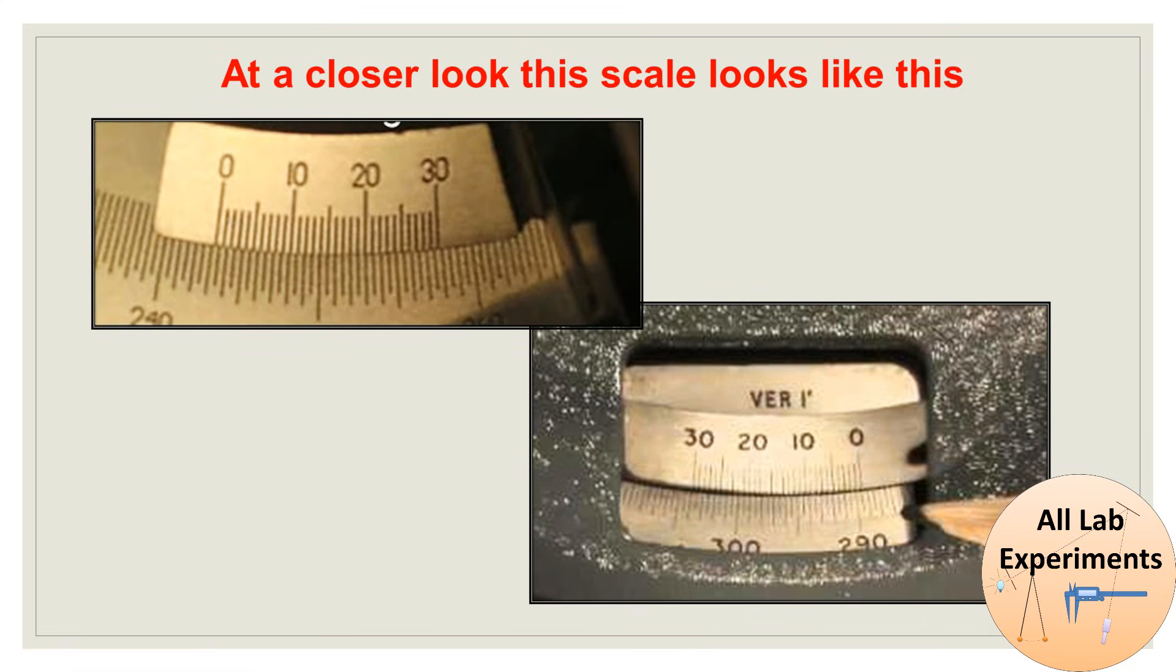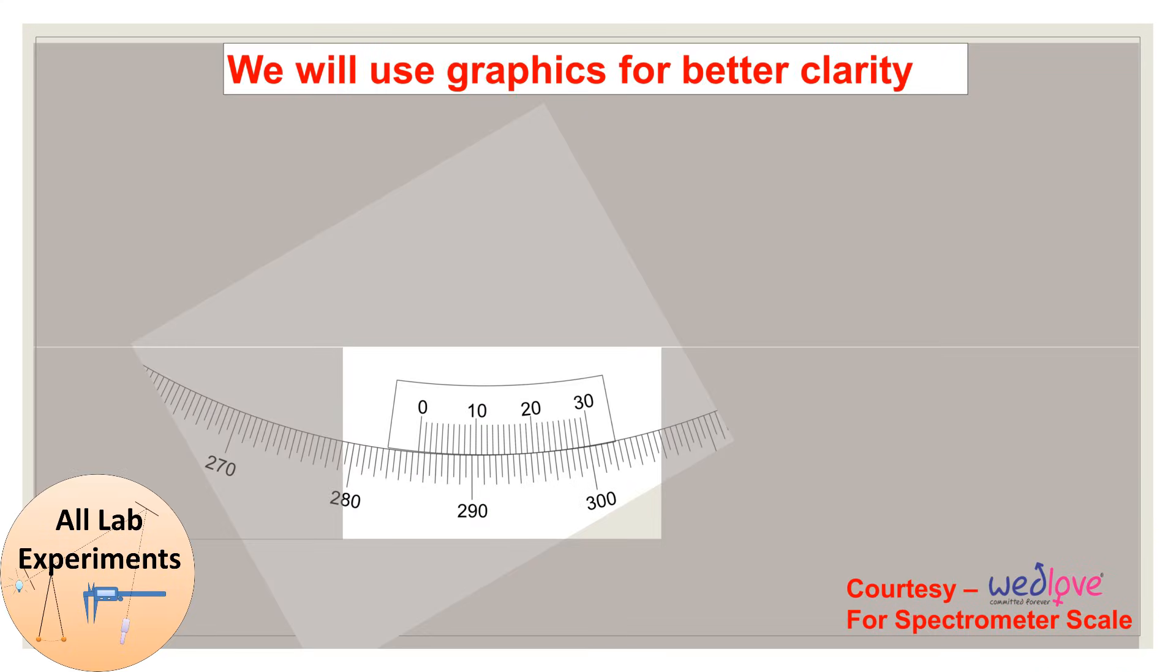At a closer look, this scale looks like this. So here we are going to read such scales, but for better clarity we are going to use graphics rather than the original spectrometer. Here in this figure you can see a small part of the complete circular main scale and there is a vernier scale.